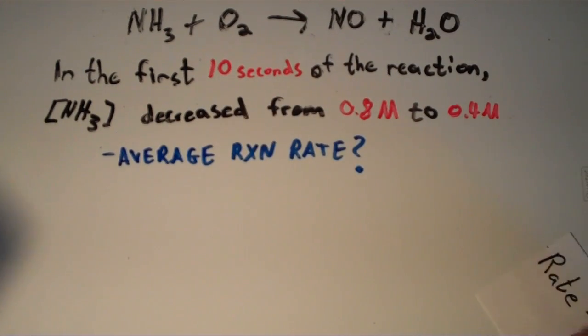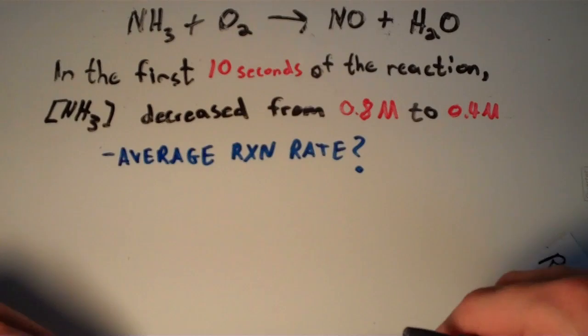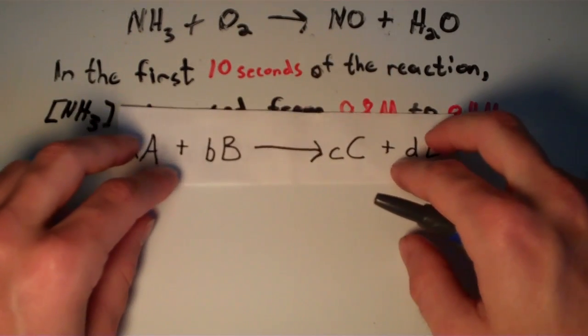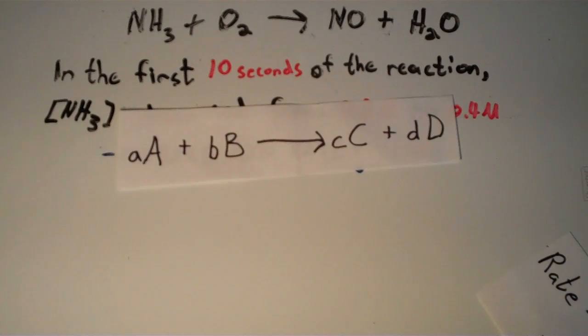So in order to solve this, we're going to go back to our trusty rate equation. And it says that any time you have A moles of A plus B moles of B yields C moles of C plus D moles of D, the rate can be expressed by the following terms.